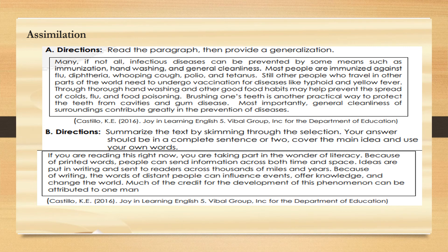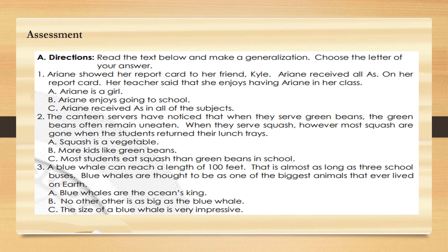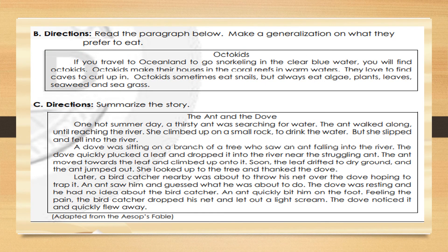For assimilation, Letter A directions: Read the paragraph, then provide a generalization. For Assimilation Letter B: Summarize the text by skimming through the selection. Your answer should be in a complete sentence or two. Cover the main idea and use your own words. For the assessment, Letter A directions: Read the text below and make a generalization — choose the letter of your answer. Letter B directions: Read the paragraph below and make a generalization on what they prefer to eat. And for Letter C directions: Summarize the story.